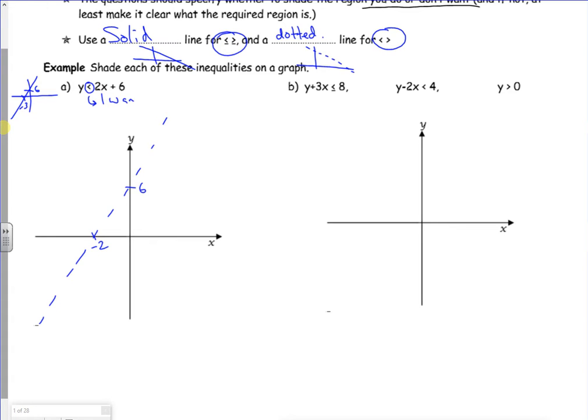So I want the y values that are below the line 2x plus 6. So I want everything below this line, because if I choose a point there, the y value of that is below the y value for x is 1. So if I tried x is 1, the y value would be 8, but 1 is below 8. So that's the bit I want.